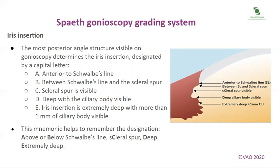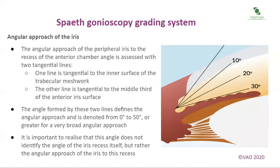A mnemonic helps to remember the designation: Above or below Schwalbe's line, Scleral spur, Deep, Extremely deep. The angular approach of the peripheral iris to the recess of the anterior chamber angle is assessed with two tangential lines. One line is tangential to the inner surface of the trabecular meshwork; the other is tangential to the middle third of the anterior iris surface. The angle formed by these two lines defines the angular approach, denoted from 0 to 50 degrees or greater for a very broad angular approach. This angle identifies the angular approach of the iris to the recess, not the angle of the recess itself.